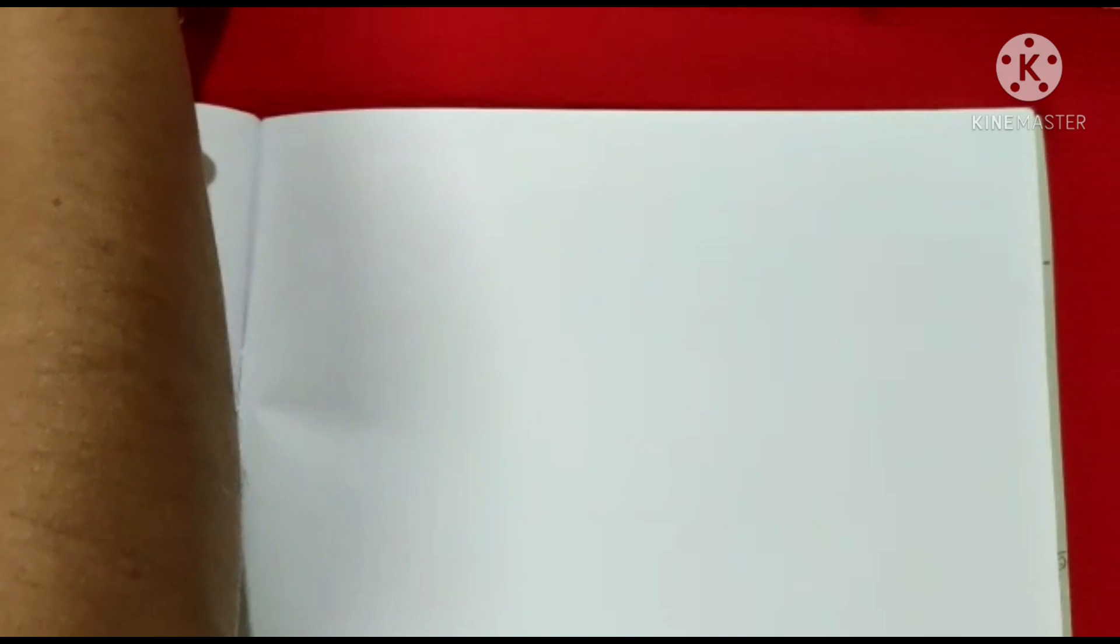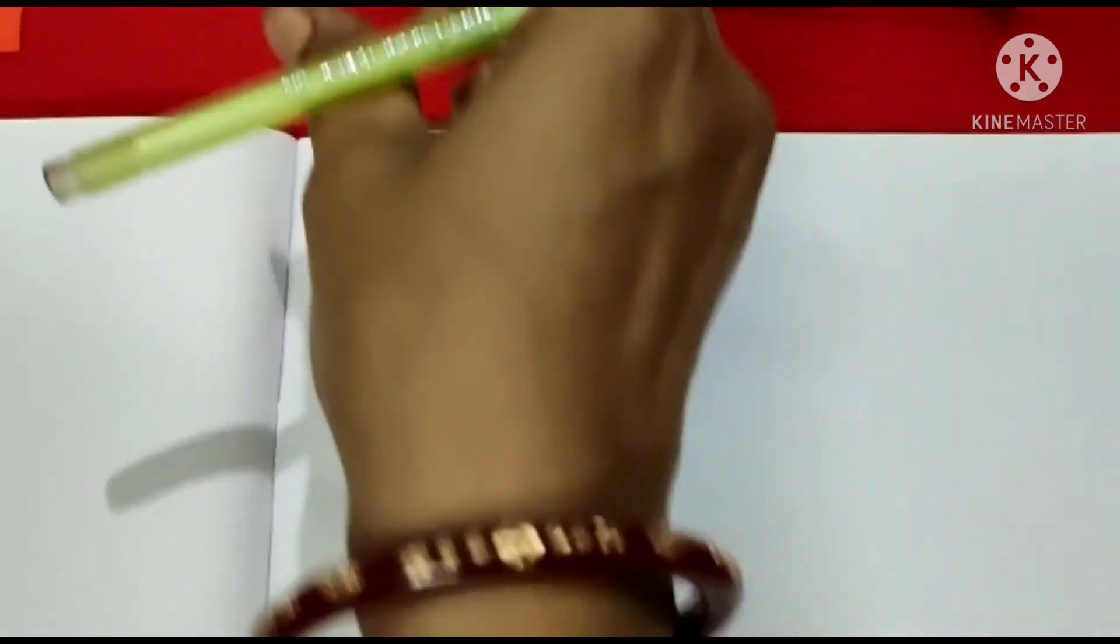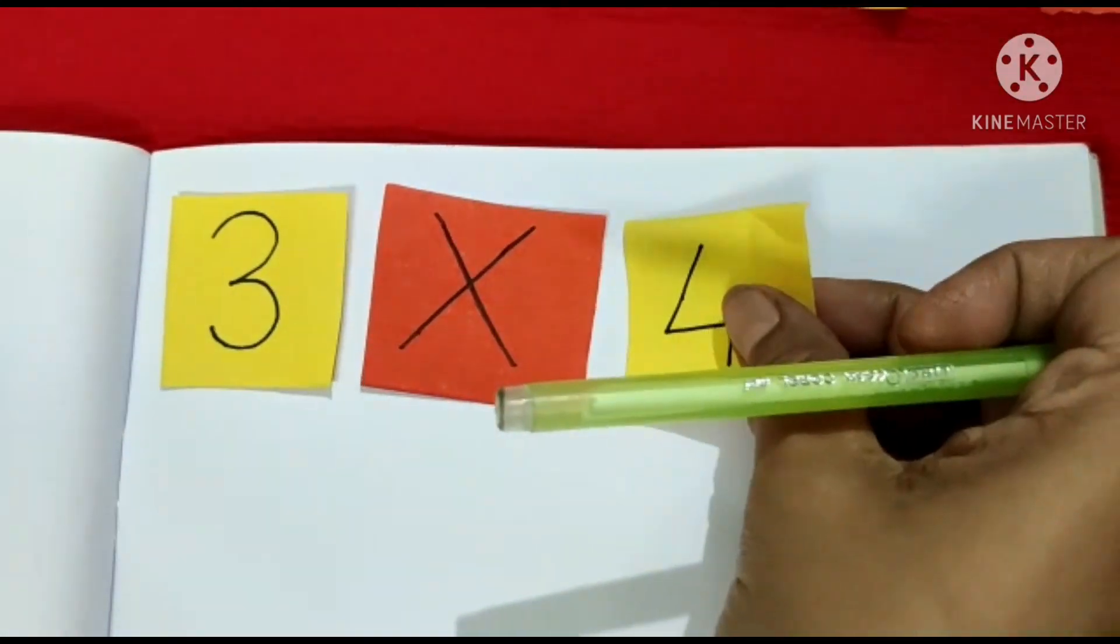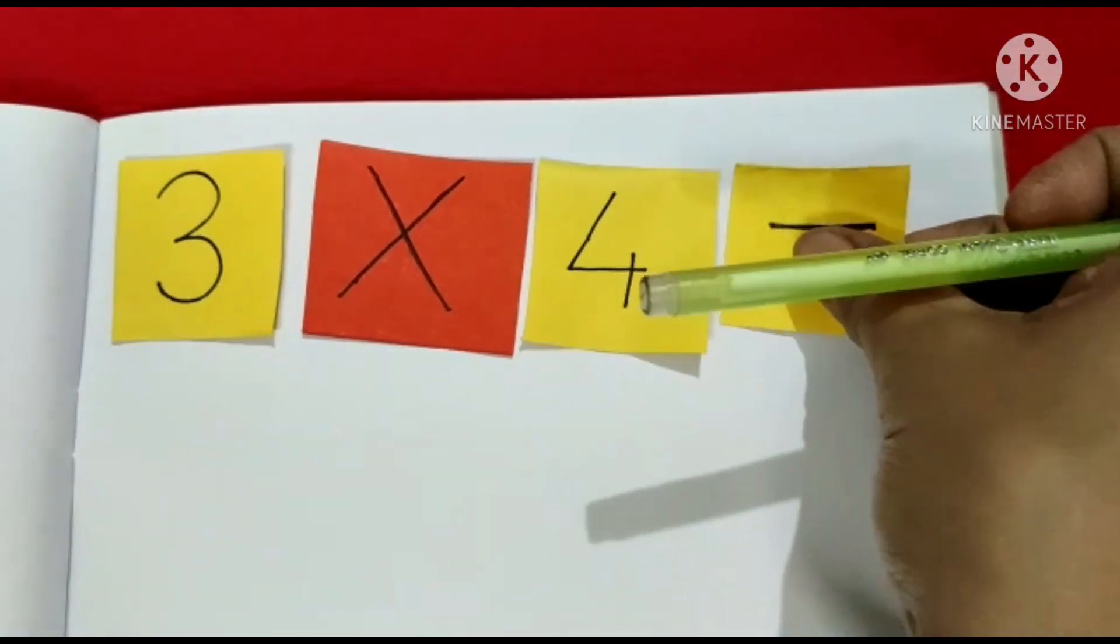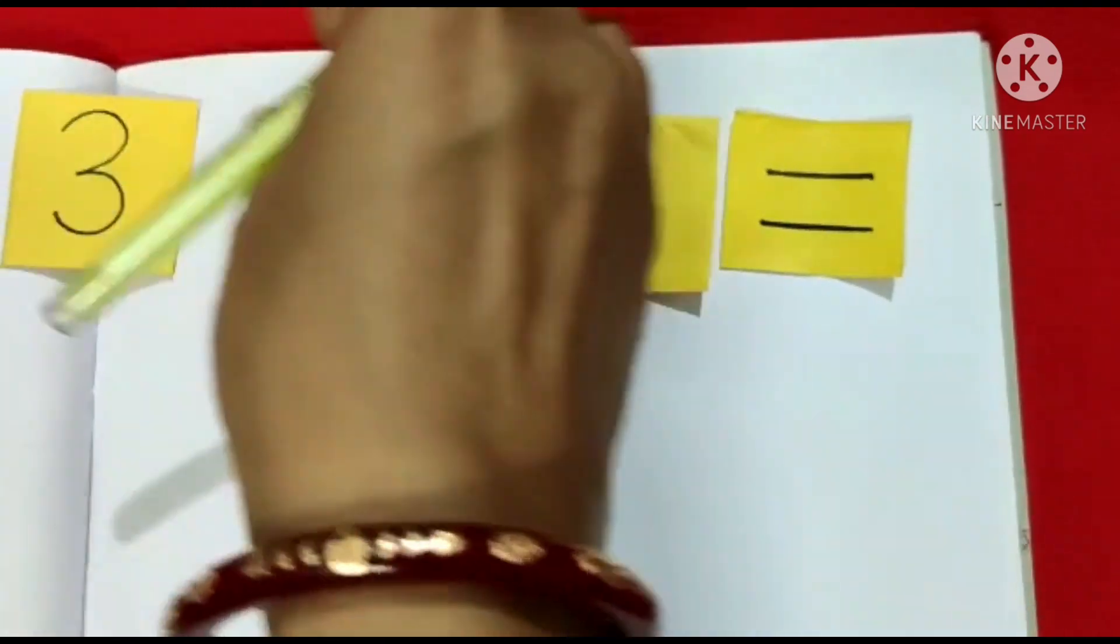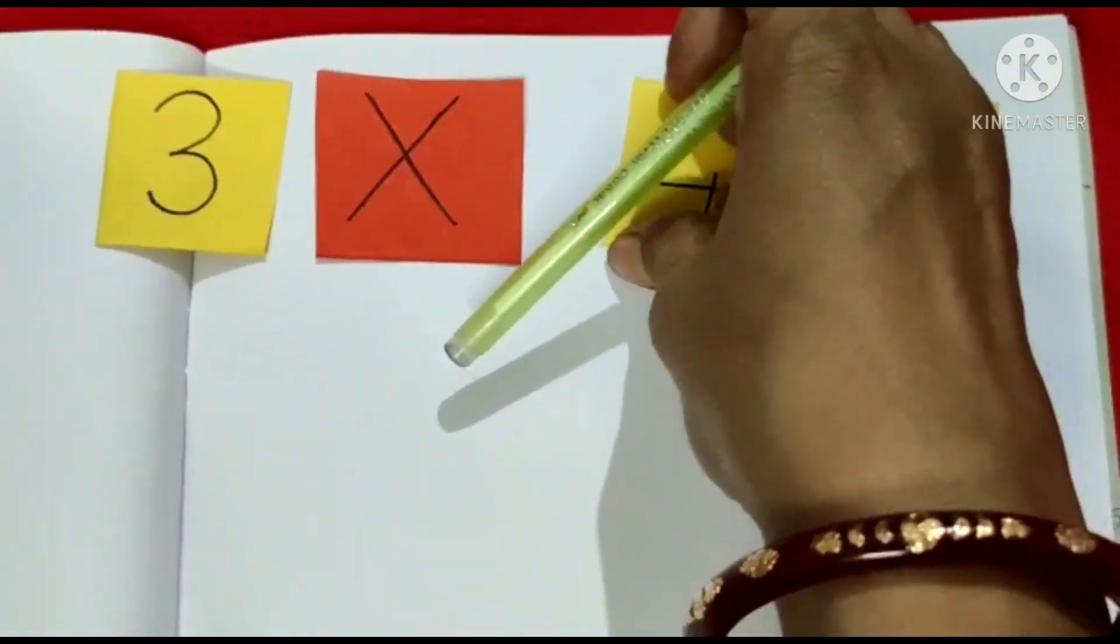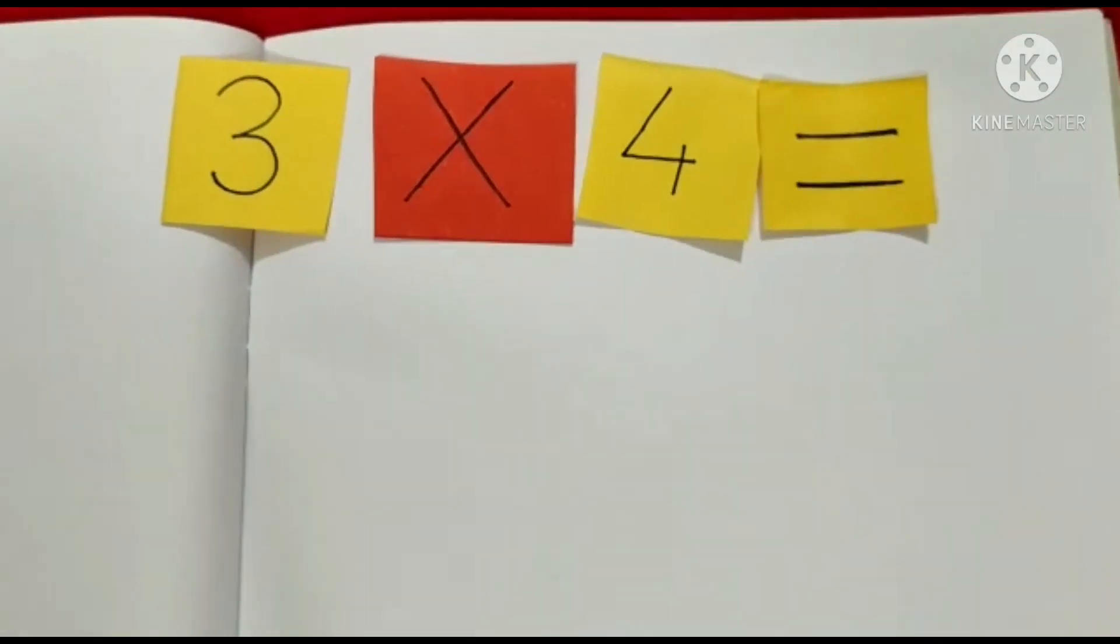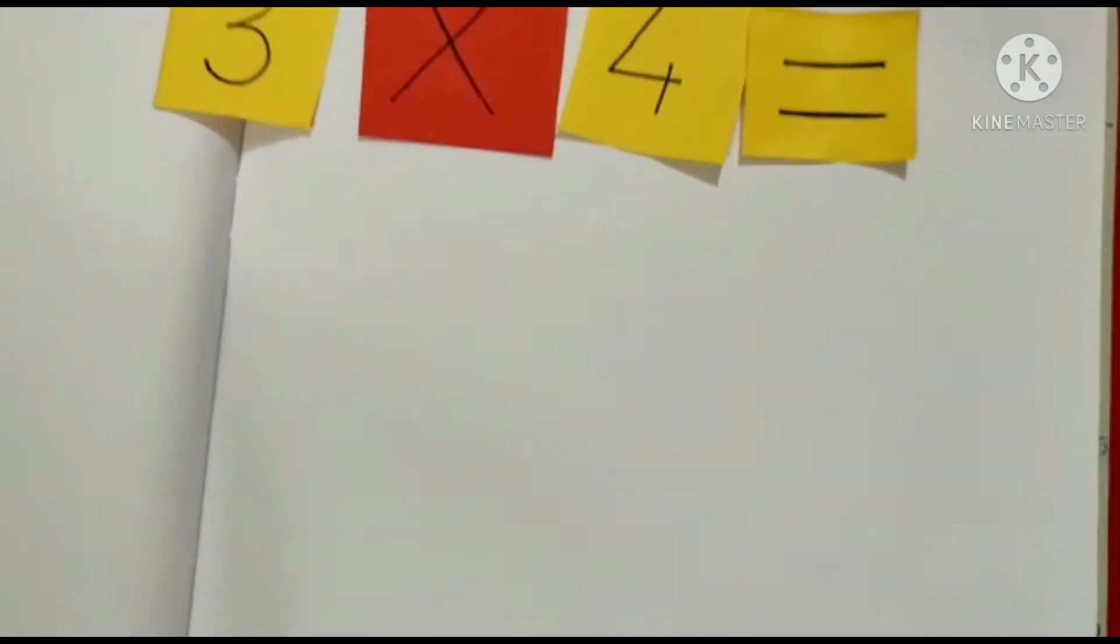Do we have to count? Let us do one with table of 3. So what do you want children? 3 fours? How much? 3 fours, how much? Let us find out.